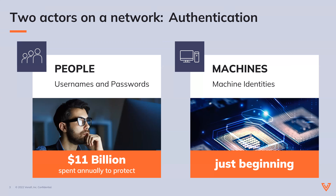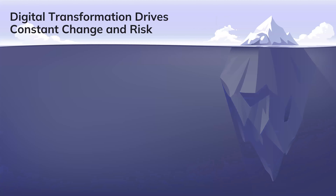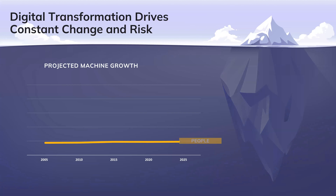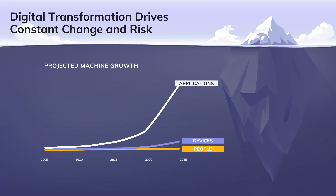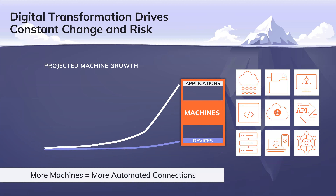These problems only get worse as organizations accelerate their digital transformation initiatives. Digital transformation creates three high-velocity vectors for management of machine identities. The first is the volume of machines. The number of people on enterprise networks will remain relatively flat over the next five years, but the number of devices is growing much more quickly. The volume of applications is already skyrocketing, and this increase will continue to accelerate. The second is the variety of machines and the variety of identity types needed to support them.